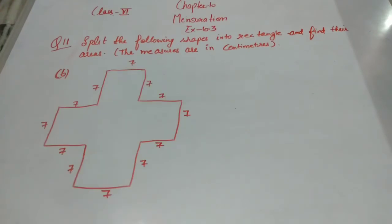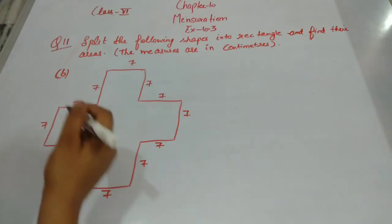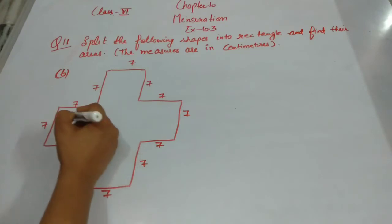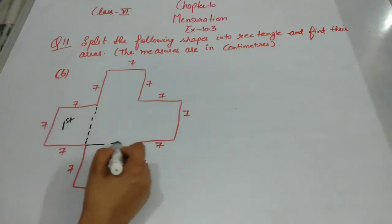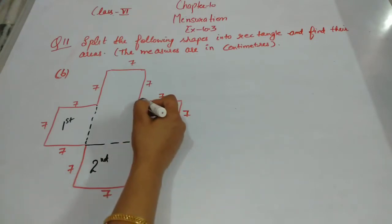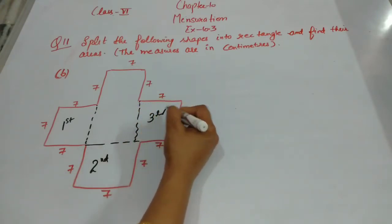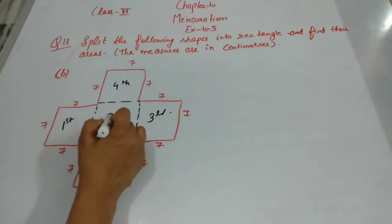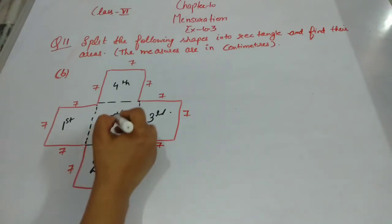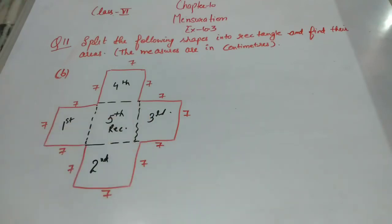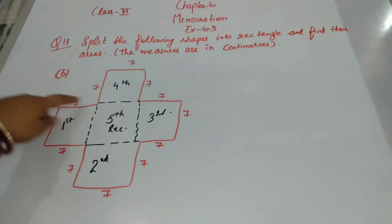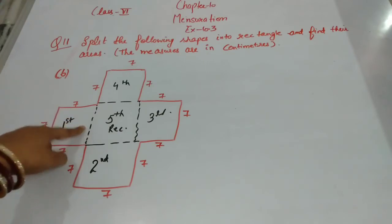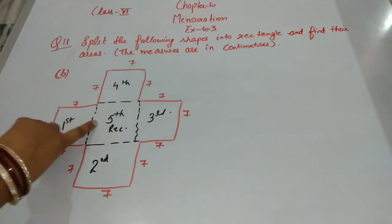Now let us move to Part B. In Part B, the value 7 is given for all sides. I have divided the shape into rectangles: first rectangle, second rectangle, third rectangle, fourth rectangle, and fifth rectangle. Now look at the first rectangle — the dimension is 7.